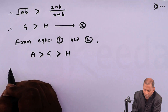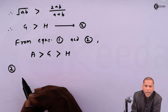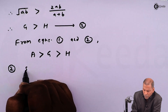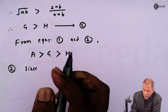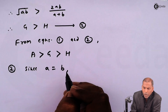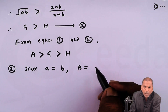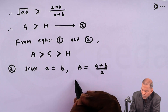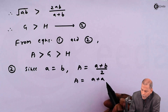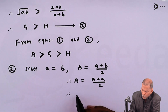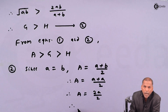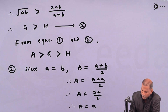Now we prove the second part. In the second part, we are given that the two numbers are equal. Therefore, since a is equal to b, in that case arithmetic mean A equals (a + b) / 2, which becomes (a + a) / 2. Therefore, A equals 2a / 2, and cancelling 2 from numerator and denominator, we have capital A equal to small a.